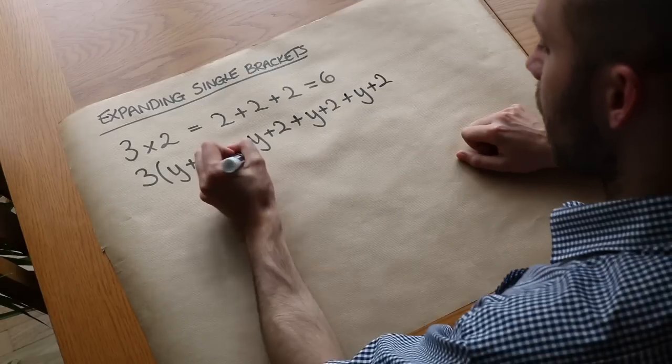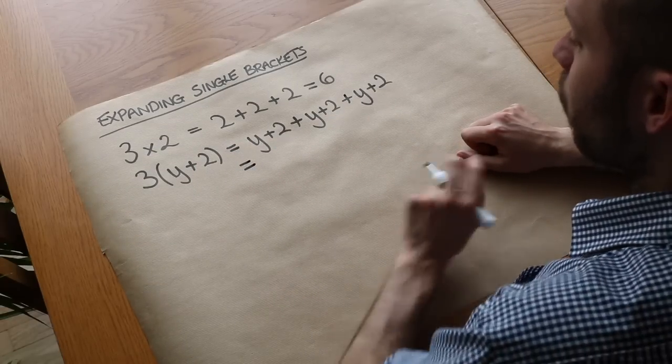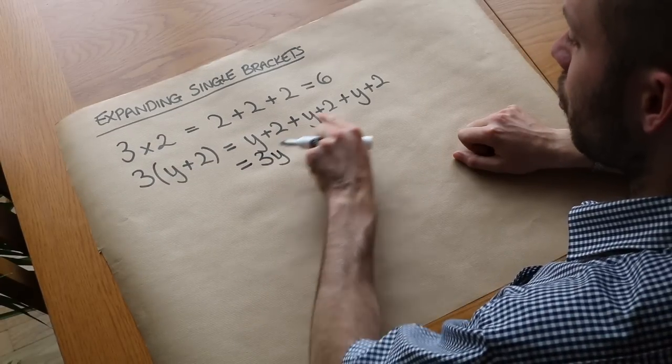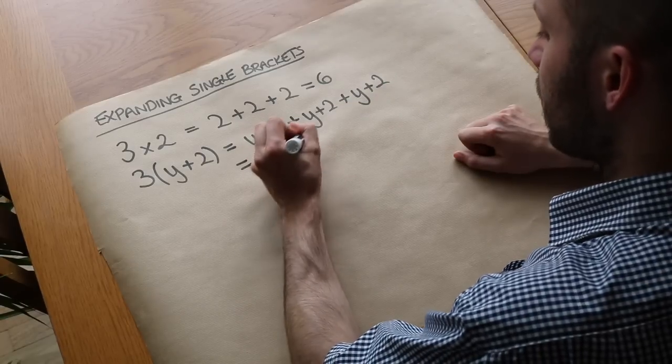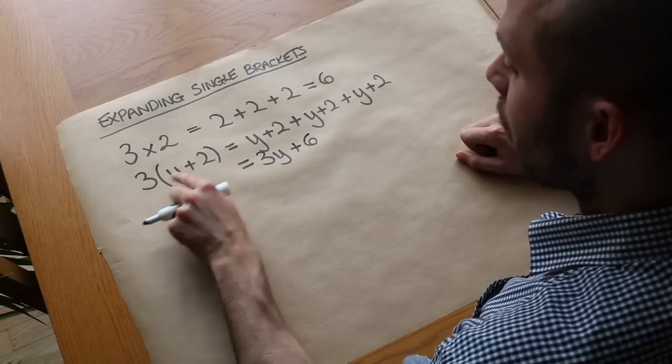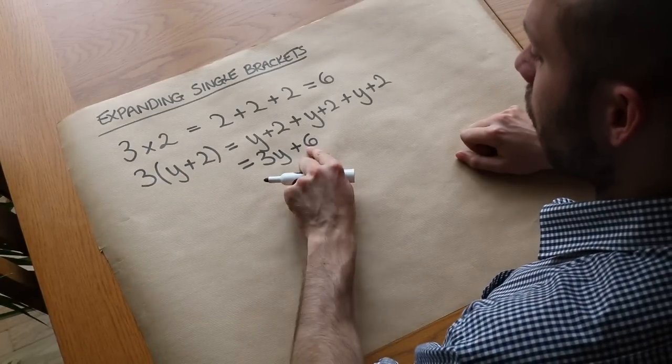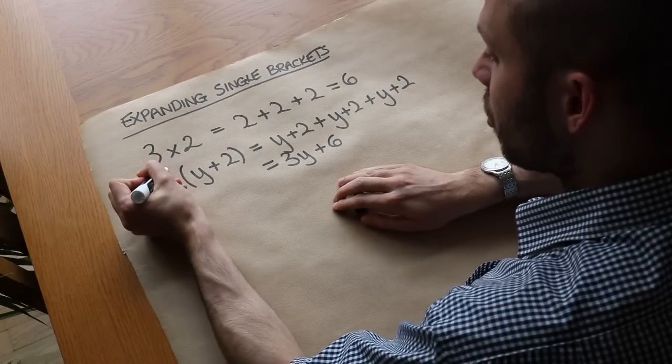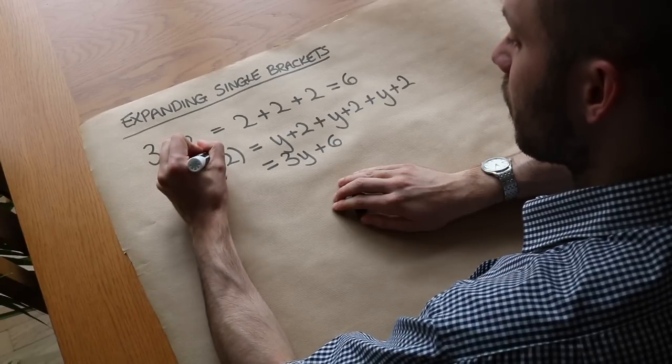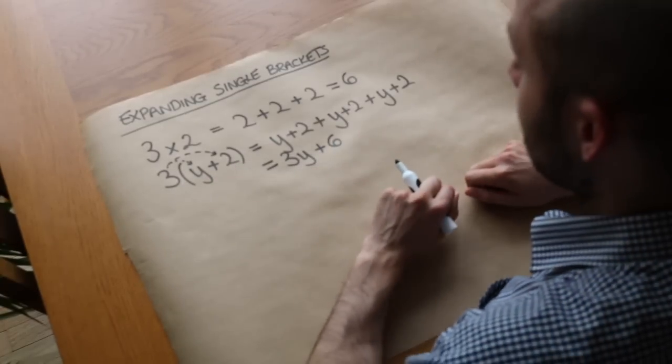We've got 3 lots of y plus 2 and if we collect like terms we've got y plus y plus y, that's 3y. And if we collect the number terms we've got 2 plus 2 plus 2, that is 6. Now can you see what we've done here is we've done 3 lots of the y, which was 3y, and we've done 3 lots of 2, which is 6. So the quick way to do this is you do 3 lots of the first thing and 3 lots of the second thing.